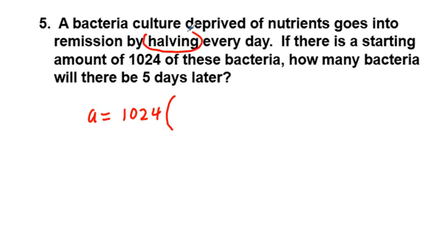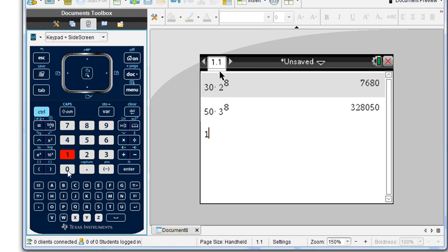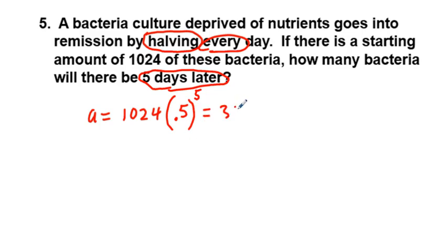Now this is the tricky thing: by halving. The title of this video lesson is cell growth, but halving is going to be times one half. So we have times one half or we can decimalize that as 0.5. And we have five days later, halving every day, and five days later that would be five total periods. So we have 1024 times one half to the fifth power, and we get 32 bacteria.